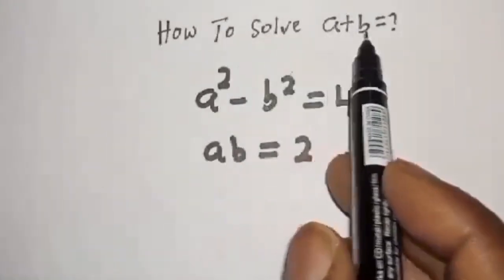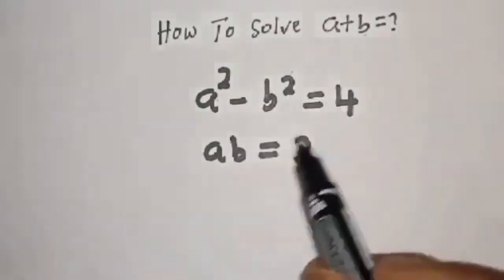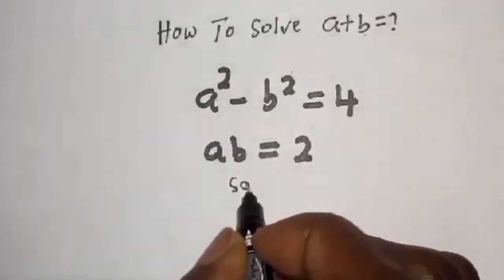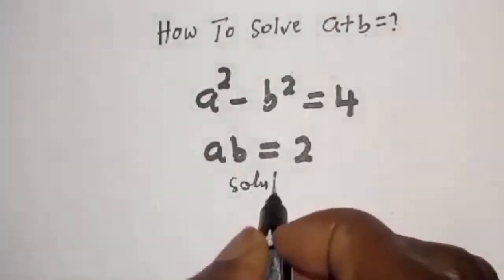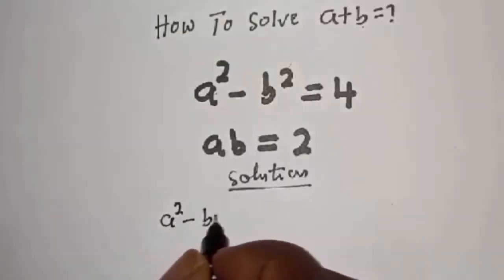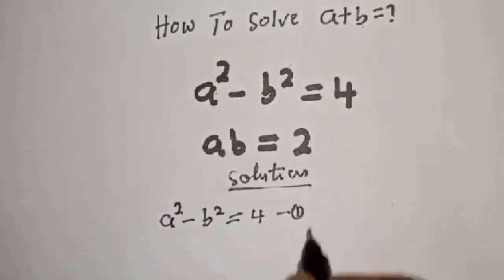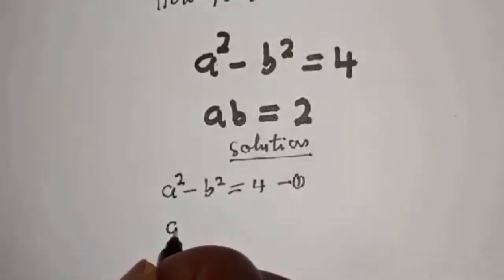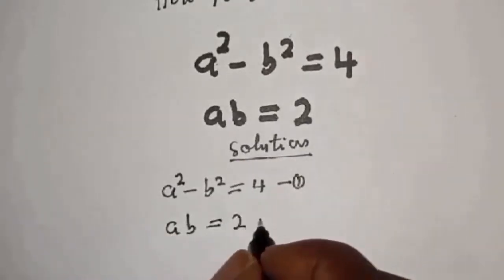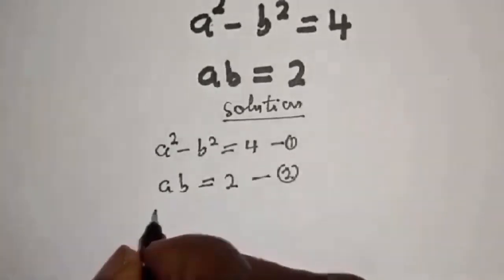How to solve for a plus b in this equation: a squared minus b squared is equal to 4, and ab is equal to 2. Let's call a squared minus b squared equals 4 equation 1, and ab equals 2 equation 2.